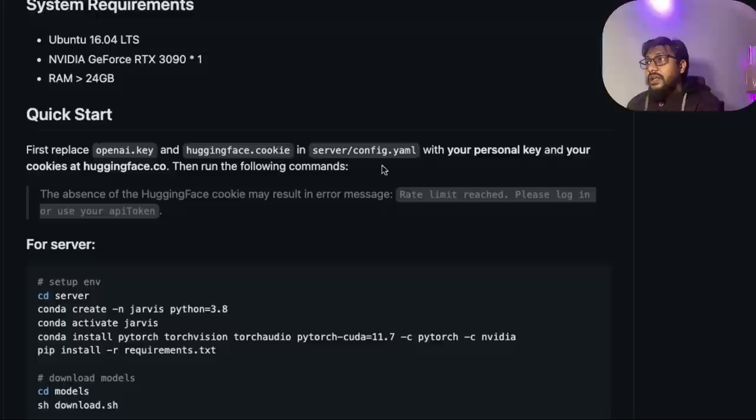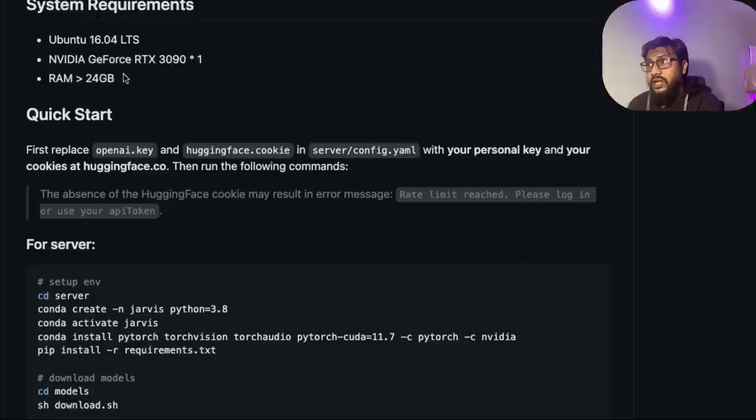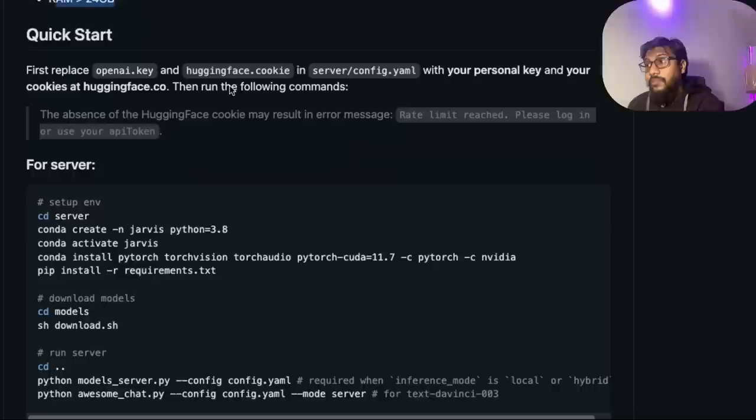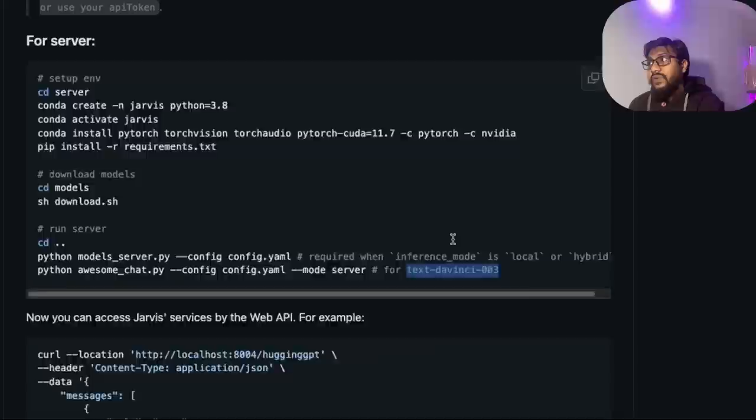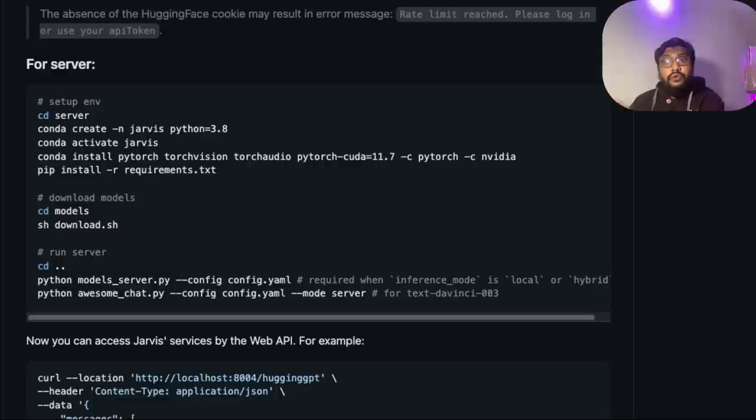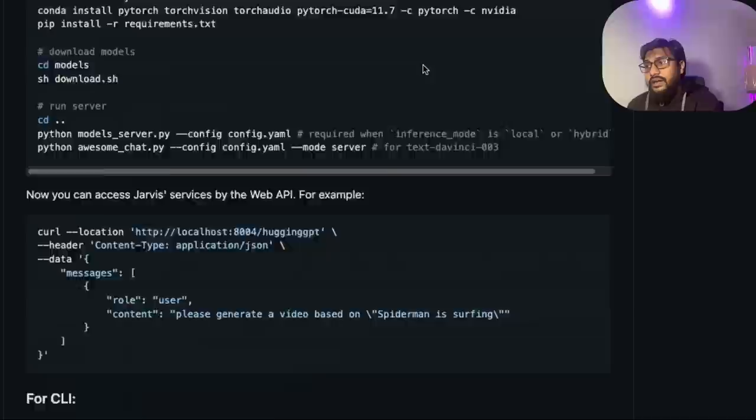If you want to try this out, I have not tried this out to be honest. They have given the system requirements. You need a GPU. I don't own a GPU personally, so unfortunately I cannot try. But you also need more than 24 gig RAM. If you want to try it out, try it out. Here you can actually specify what kind of model you want to use. For example, if you want to use text-davinci-003, which is the GPT-3.5, you can specify here. The most important thing that you need is you need OpenAI API key and also you need the HuggingFace cookie which you need to get when you have logged into the HuggingFace system.